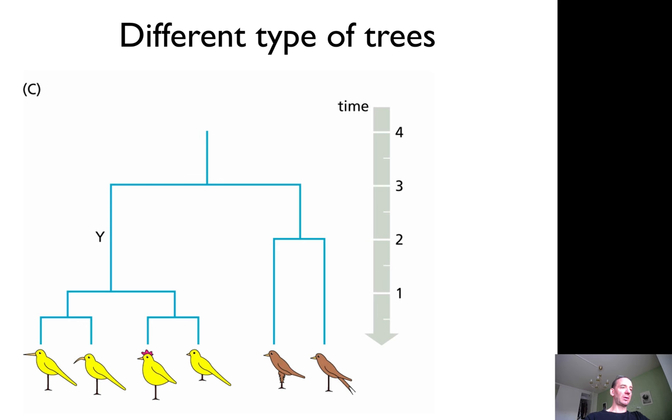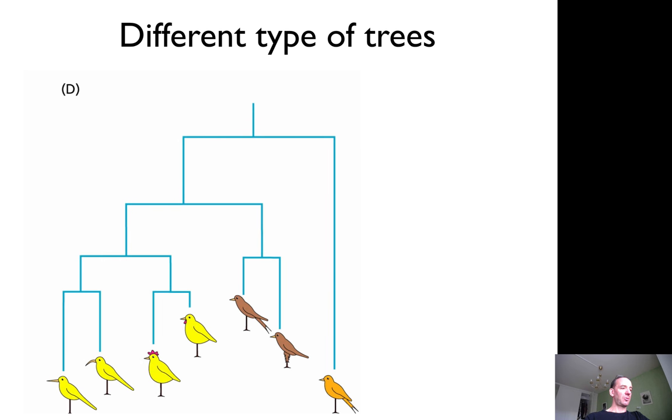However, this would assume that you have the same mutation rate in every branch all the time, and that is not the case. More likely, you would have to adjust the tree something like this if you want to depict all the lengths of each branch correctly.